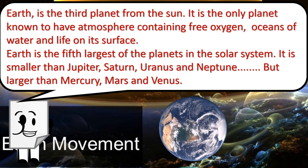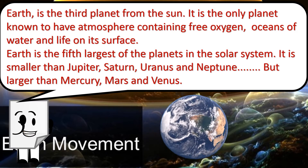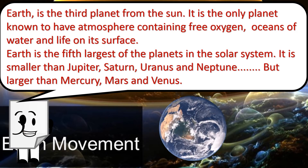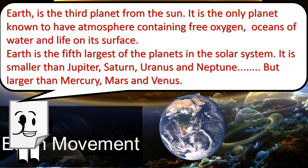Earth is the third planet from the Sun. It is the only planet known to have an atmosphere containing free oxygen, oceans of water, and life on its surface. Earth is the fifth largest of the planets in the solar system. It is smaller than Jupiter, Saturn, Uranus, and Neptune, but larger than Mercury, Mars, and Venus.